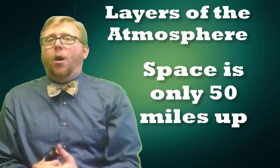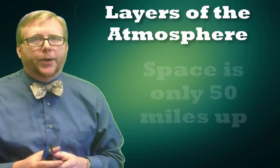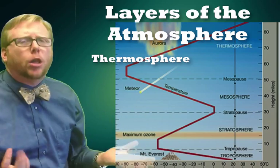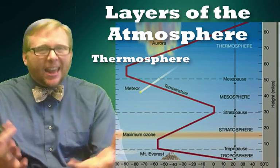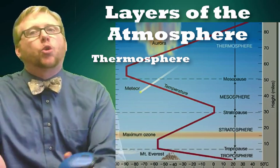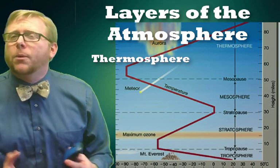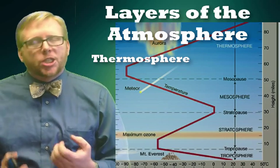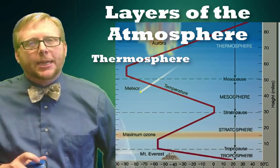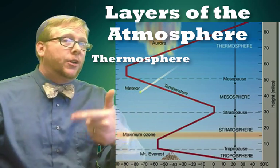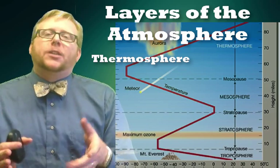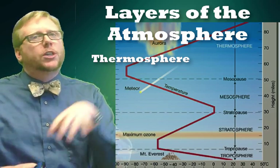Outside the mesosphere is the thermosphere, which extends to about 400 miles — roughly 600 kilometers. It traps gases that absorb solar radiation and can reach really hot temperatures of 1,700 degrees Celsius, depending on the direction of solar winds. But remember, just because there's high energy doesn't mean it will feel warm — there are very few particles there, so you really wouldn't feel as warm as the temperature suggests. So those are our four layers: the troposphere, the stratosphere, the mesosphere, and the thermosphere. For climate and weather, we focus on the troposphere and a bit of the stratosphere.